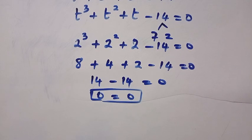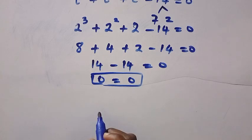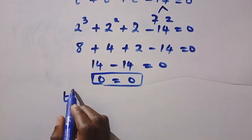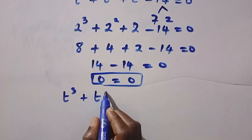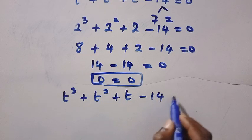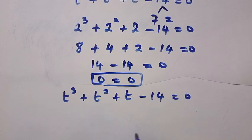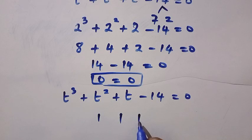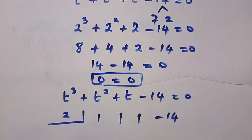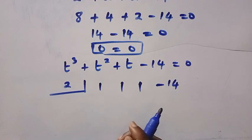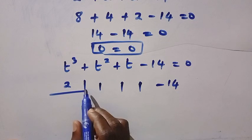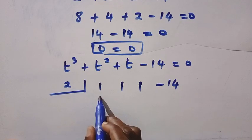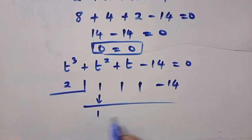Since we have gotten the value of t, let's try and look for the other values here that also satisfy this. If you recall from where we have t^3 + t^2 + t - 14 = 0, I want to get all the coefficients of this. The coefficient of t^3 is 1, coefficient of t^2 is 1, coefficient of t is 1, and we have -14. The value that we assumed earlier is 2. I'm going to use this to get the other values or the other equation. We call this method the press method.